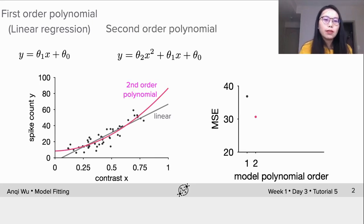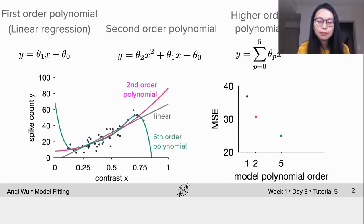Then I'm showing here is the second order fit, which is the magenta curve, and the fifth order fit which is the green curve here. The MSEs for all orders are collected on the right.